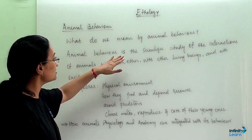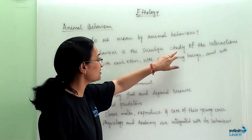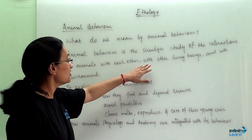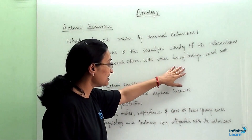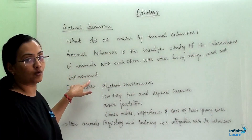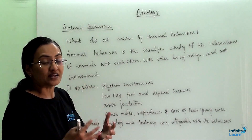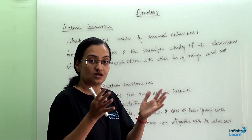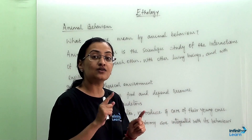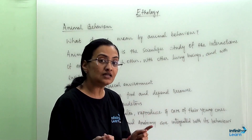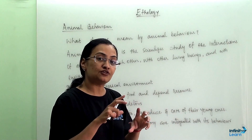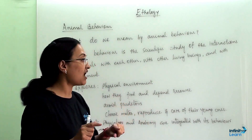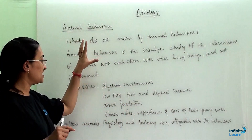Animal behavior is the scientific study of the interactions of animals with each other, with other living beings and with the environment. When one animal interacts with its surroundings, its environment and with other living beings, the derived observations are termed as animal behavior.